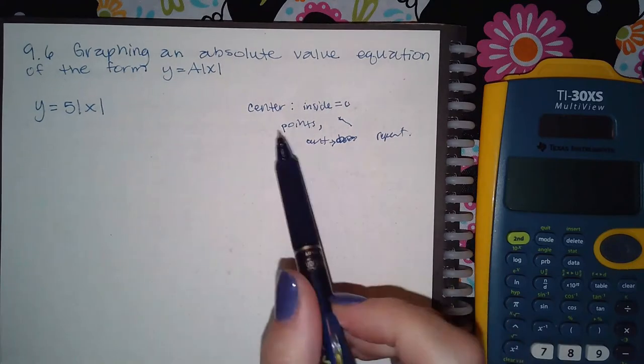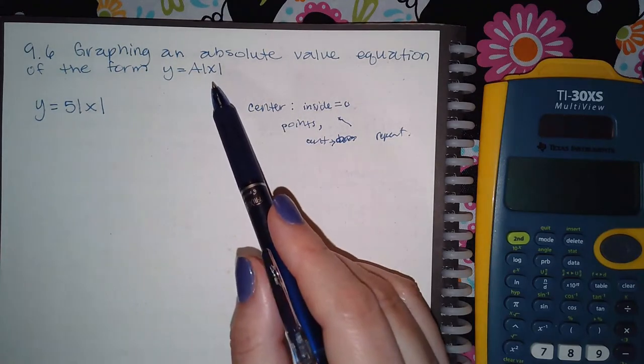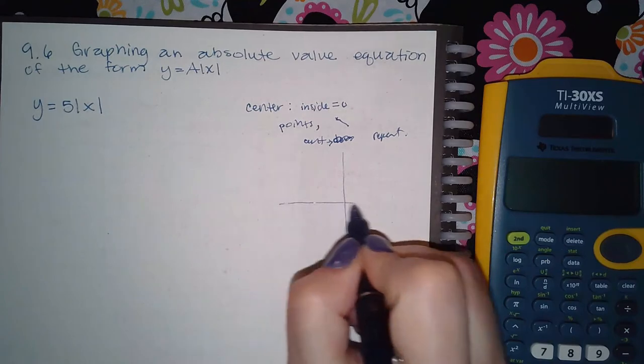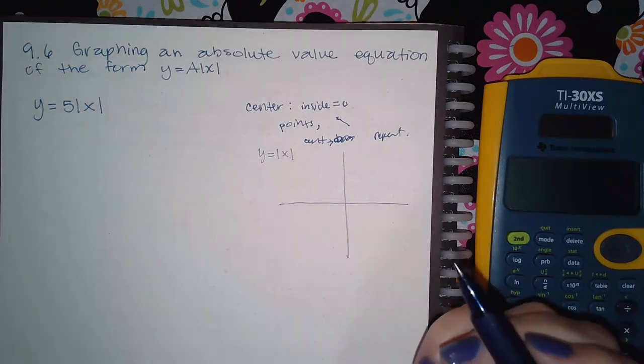Some things that I want you to understand is that when you're drawing the absolute value of x, it's important to know what that looks like. So what does y equal the absolute value of x look like all by itself?